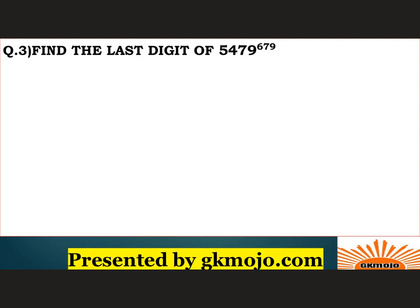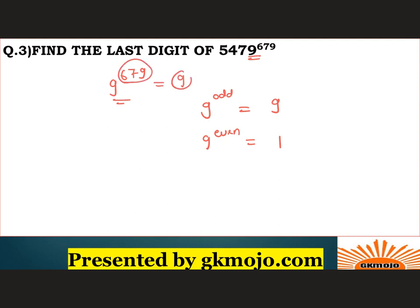Find the last digit of 5479 to the power 679. Here we are dealing with the unit digit 9. Write down the thumb rule: 9 to the power odd is always 9, and 9 to the power even is always 1. Since 679 is an odd number, the unit digit will be 9. Hence the correct answer is 9.